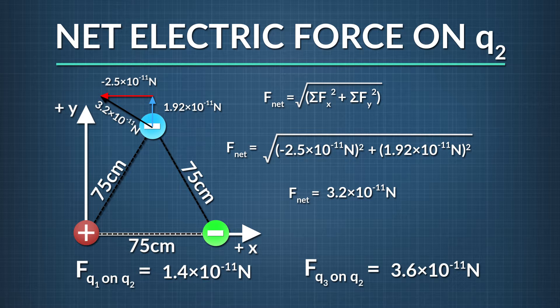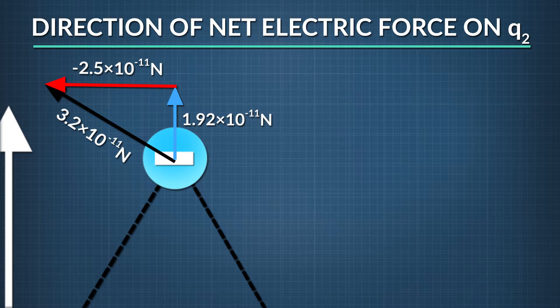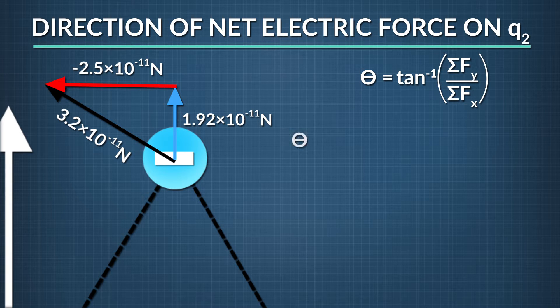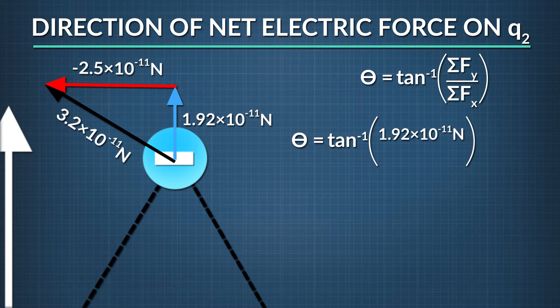That's the magnitude of the total force on q2. The direction of this net force is found using the tangent function. The angle the force forms with the positive x axis, theta, equals the arctangent of the sum of the y components of the forces acting on q2, which is 1.92 times 10 to the negative eleventh newtons.